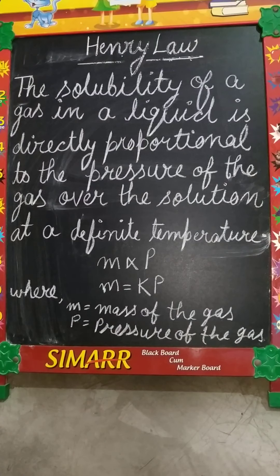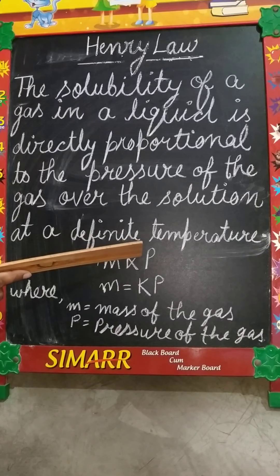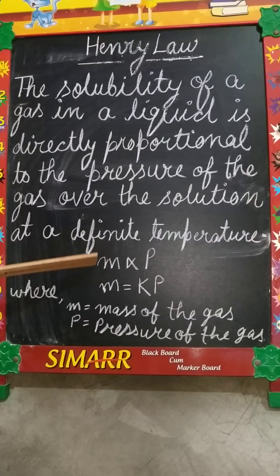Yahaan par ek formula le rahe hain. Agar hum M ko kehte hain mass of the gas — M is the mass of the gas dissolved per unit volume of the solvent — aur P ko yahaan par lete hain pressure of the gas in equilibrium with the solution. Toh mass is directly proportional to P. Gas ka mass hamesha usi same gas ke pressure ke directly proportional hota hai. Directly proportional ko equal mein convert karne ke liye we require a constant. K is here called the proportionality constant.